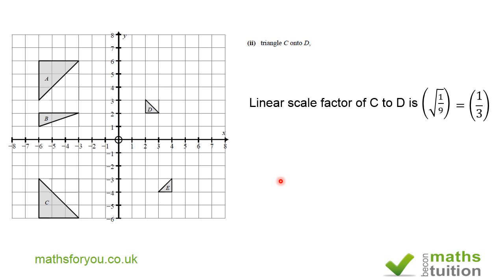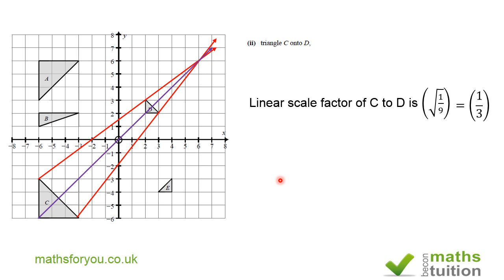We now need to find the center of enlargement. Joining the equivalent points from C to D, we find that the lines meet at the point (6, 6). So our answer is that C has been transformed to D by enlargement, scale factor 1/3, and center of enlargement (6, 6). I hope that makes sense.